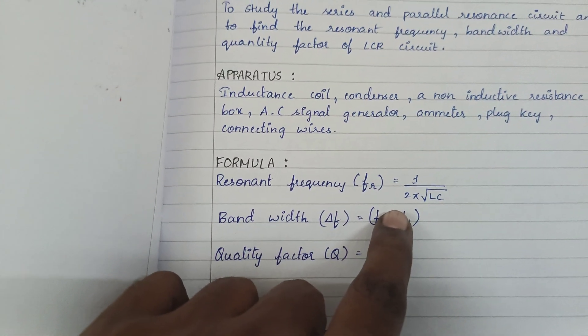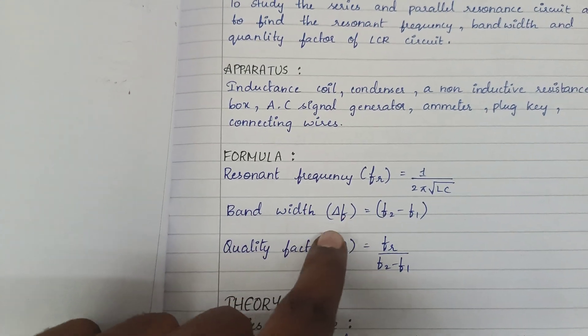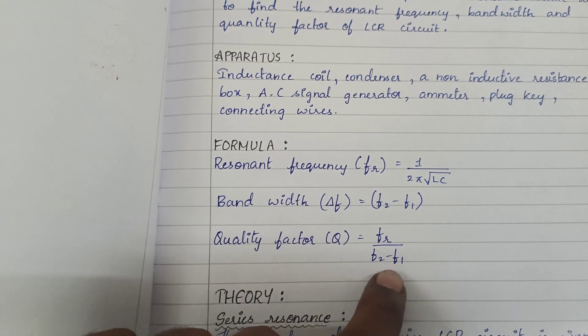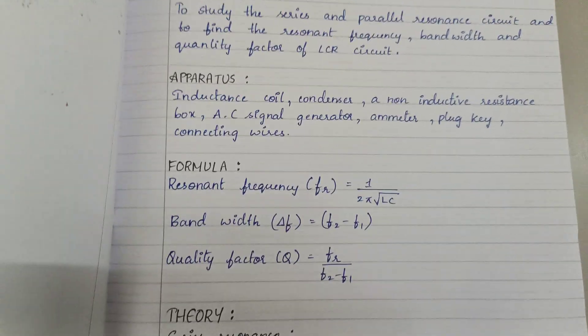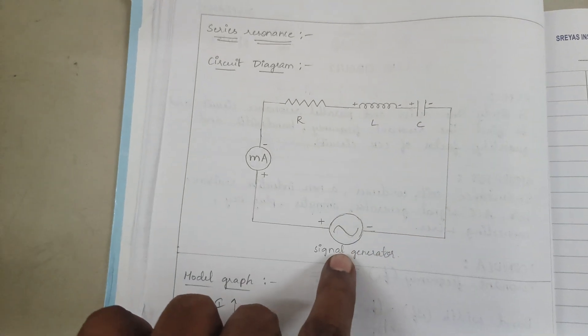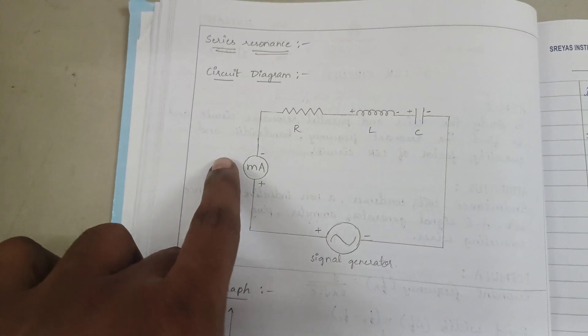This is the resonant frequency formula in series: bandwidth equals F2 minus F1, quality factor equals Fr divided by F2 minus F1. This is the circuit diagram with signal generator, ammeter, and inductor-capacitor all connected in series.